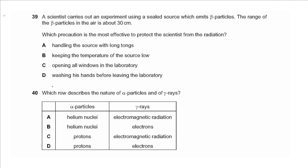Question 39 says a scientist uses a sealed source emitting beta particles with a range of about 30 centimeters in air. Which precaution best protects the scientist? Handling the source with long tongs works since the range is only 30 centimeters. Keeping the temperature low does not affect radiation, opening windows does not help, and washing hands without using tongs is insufficient. Using tongs is the best option, so the answer is A.